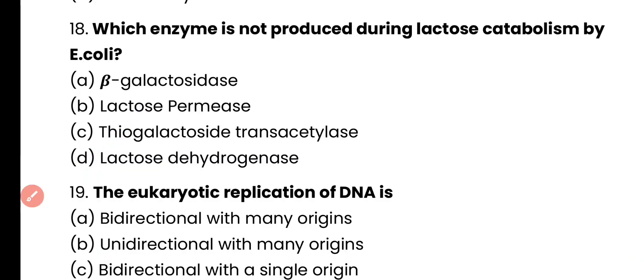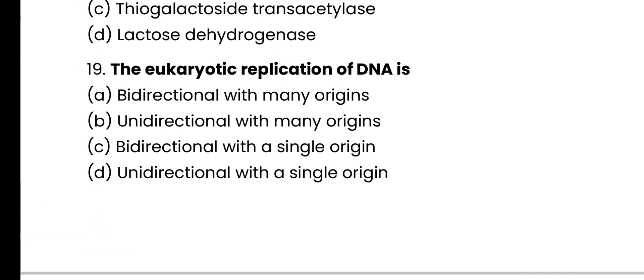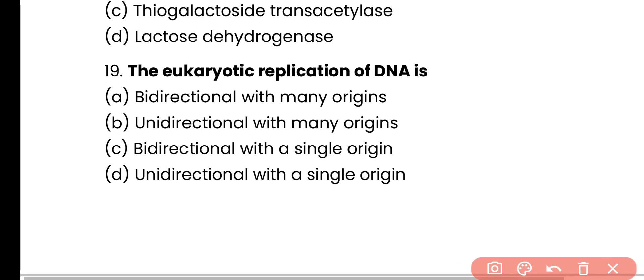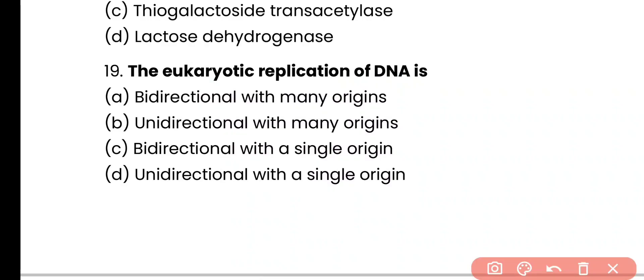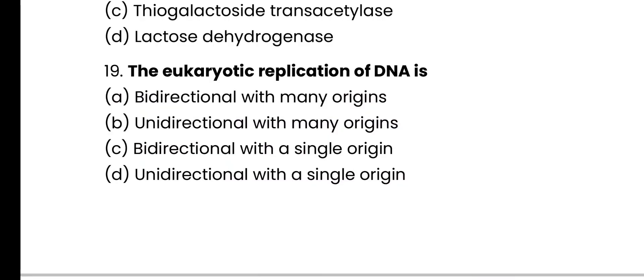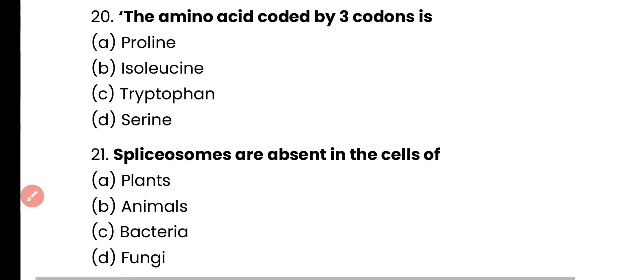Question number 19. Eukaryotic replication of DNA is: bidirectional with many origins, unidirectional with many origins, bidirectional with single origin, or unidirectional with single origin? Correct answer is option A. The eukaryotic replication of DNA is bidirectional with multiple origins.